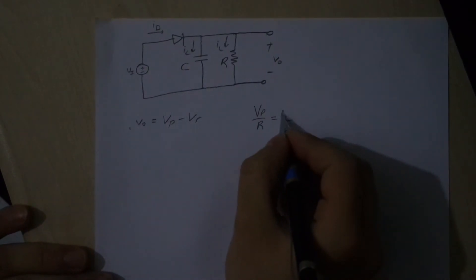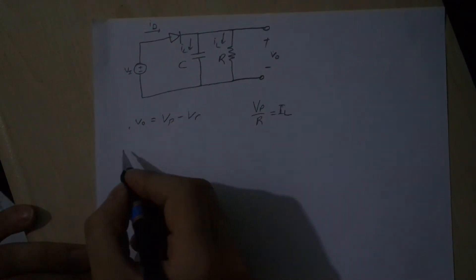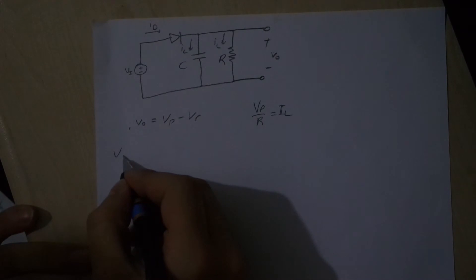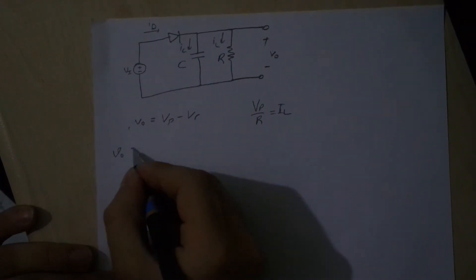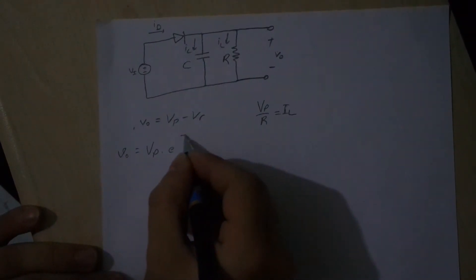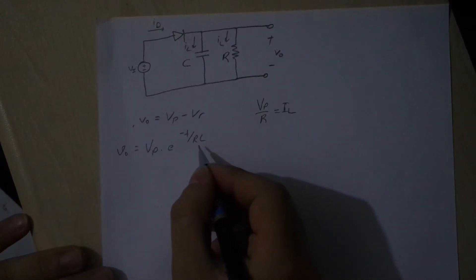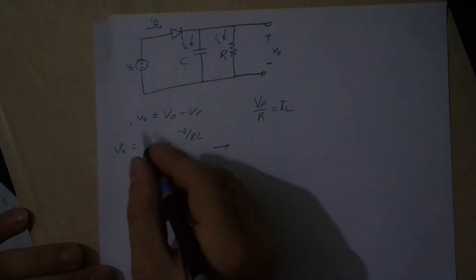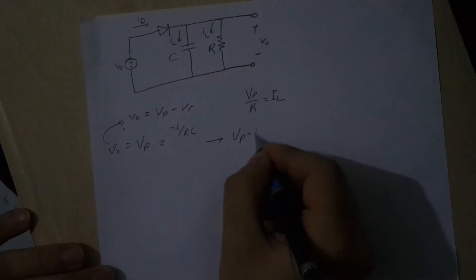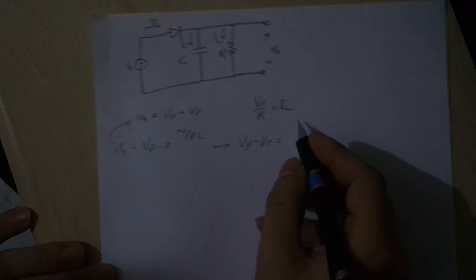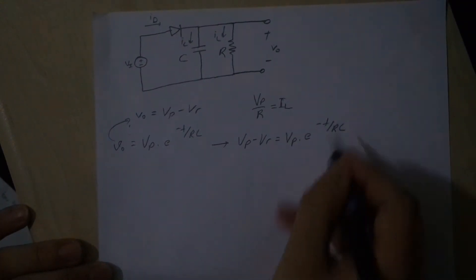V0 is the output voltage. V0 is VP times e to the minus T over RC, where RC value is tau. Here, what's V0? We found VP minus VR. VP minus VR is equal to VP times e to the minus T over RC.